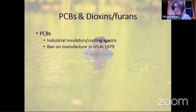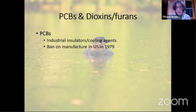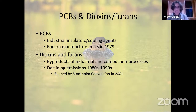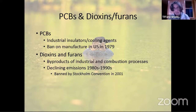Moving on to PCBs, dioxins, and furans — the legacy contaminants. PCBs were used as industrial insulators and cooling agents and were banned from manufacture in the United States in 1979. Dioxins and furans are byproducts of industrial and combustion processes. Starting in the 1980s and 90s, we saw a real decline in dioxin and furan emissions as people became aware of how problematic these contaminants were. They were also banned by the Stockholm Convention in 2001.